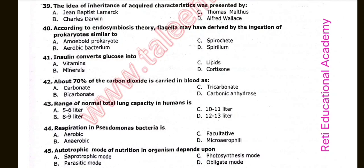Question number forty: According to endosymbiosis theory, flagella may have derived by the ingestion of prokaryotes similar to. Option C is correct: Spirochetes. Question number forty-one: Insulin converts glucose into lipids. Question number forty-two: About 70% of carbon dioxide is carried in blood. Option B is correct: Bicarbonate.